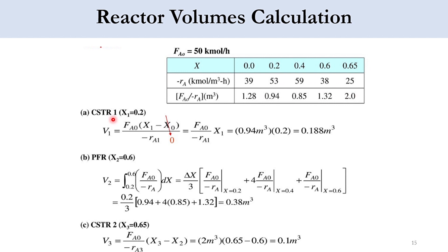For CSTR1, for which the conversion is 0.2, V1 equals FA0(x1 minus x0) over minus RA1, or that is equal to FA0 over minus RA1 times x1. If you remember our previous lecture, we have solved these equations. So FA0 over minus RA1 at 20% conversion is 0.94 multiplied by 0.2, which gives an answer of 0.188 cubic meters.